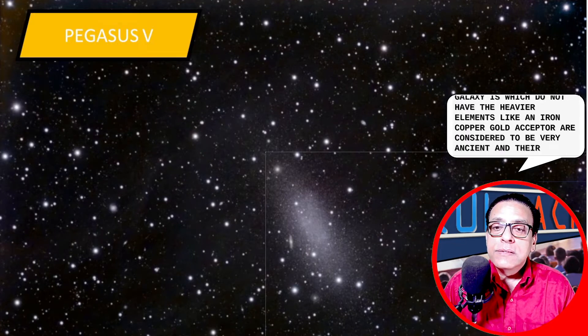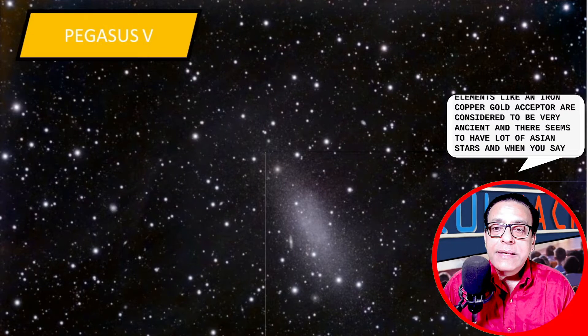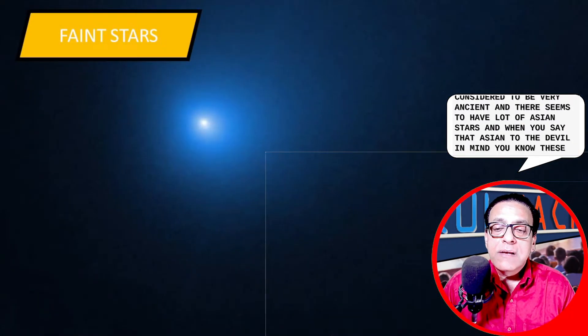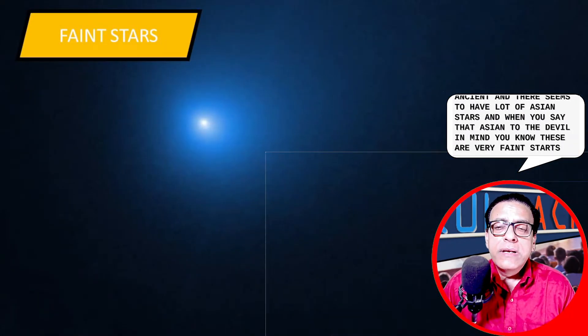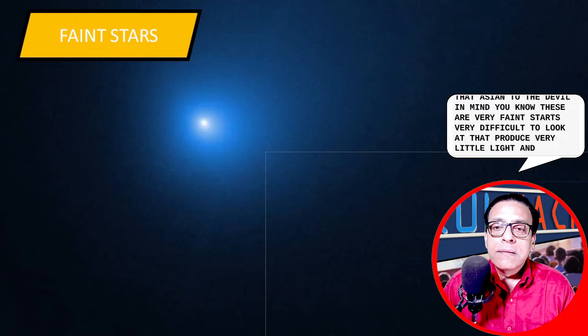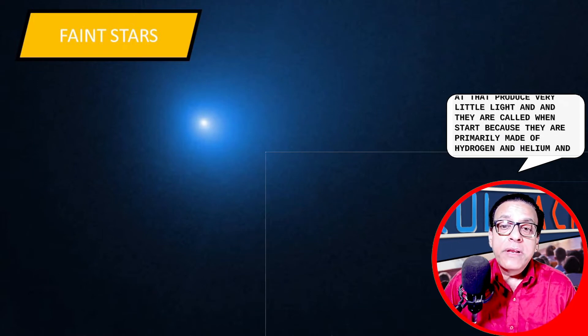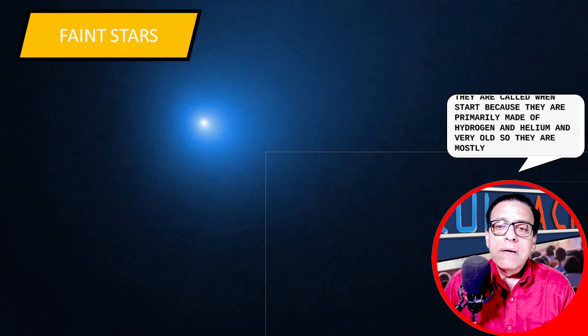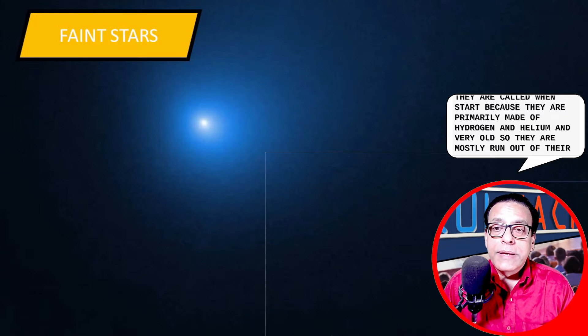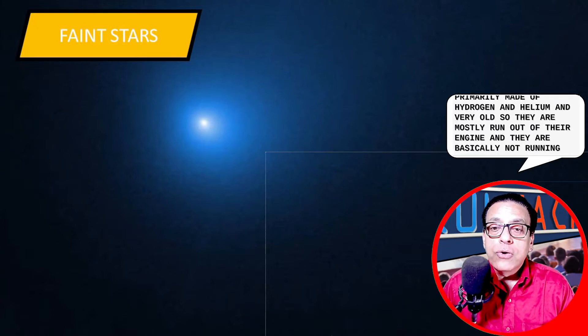And they seem to have a lot of ancient stars. And when we say ancient, because they are very mild, these are very faint stars, very difficult to look at. They produce very little light and they are called faint stars because they are primarily made of hydrogen and helium and very old. So they are mostly run out of their engine and are basically not producing a lot of light.